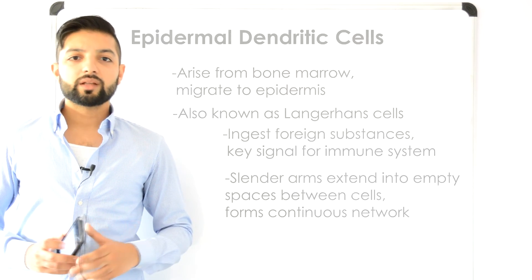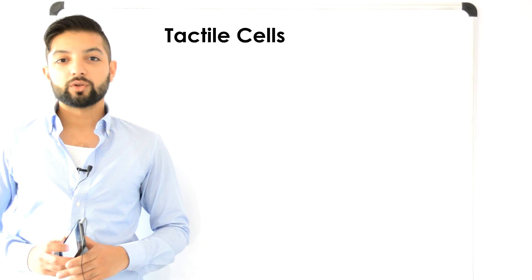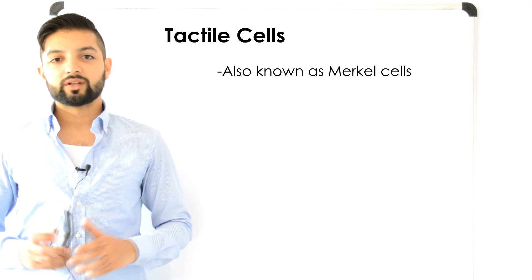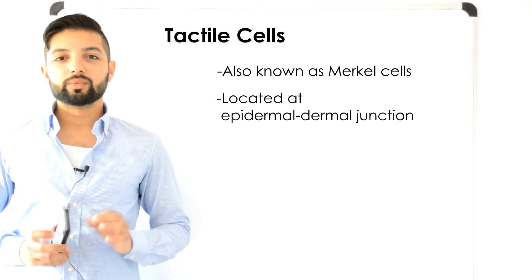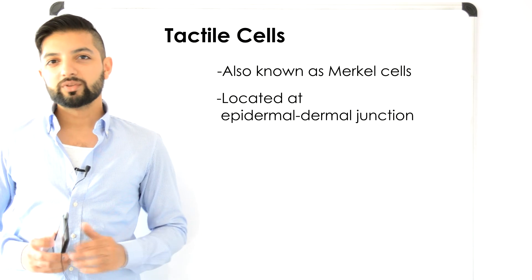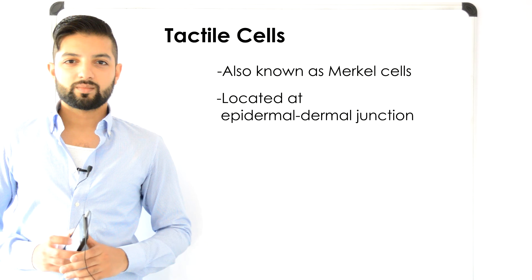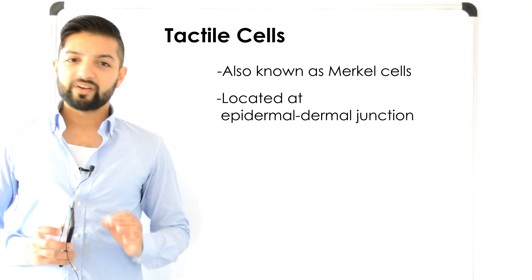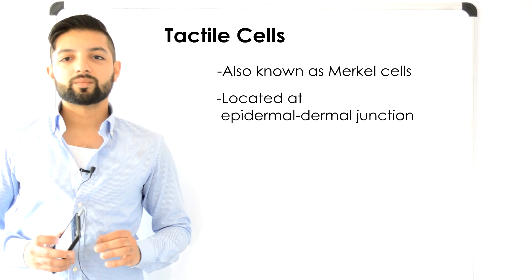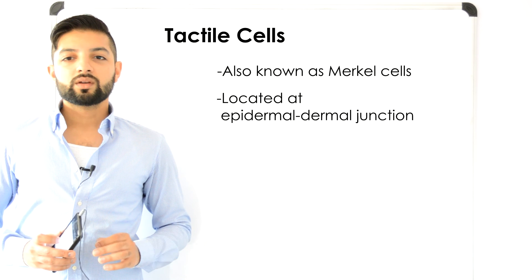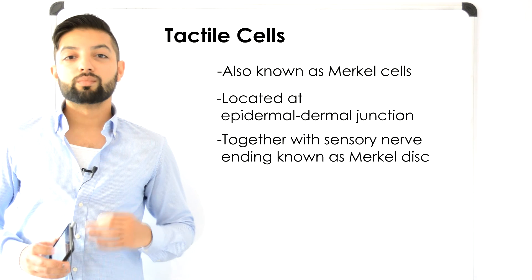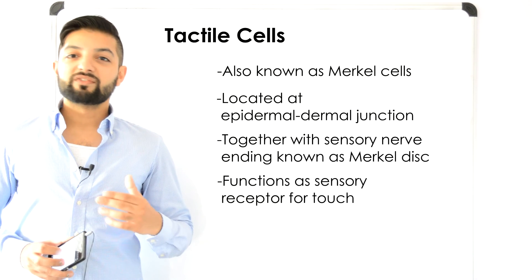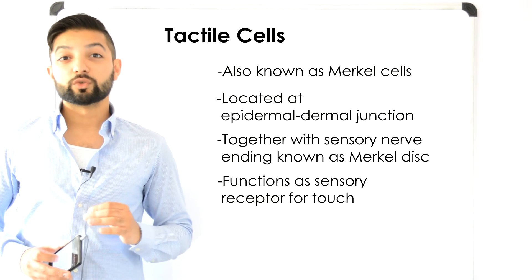Last but not least we have tactile cells, also known as Merkel cells. These Merkel cells are located at the epidermal-dermal junction, right where the epidermis turns into the dermis. Every tactile cell is associated very closely with a sensory nerve ending. This combination is called the tactile or Merkel disc, and it functions as a sensory receptor for touch.